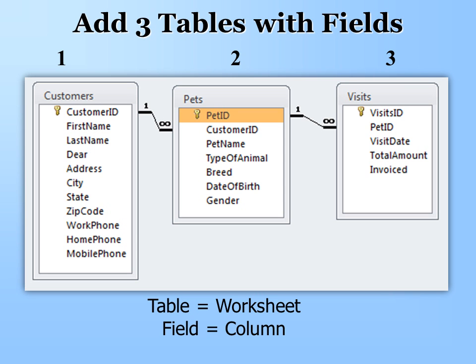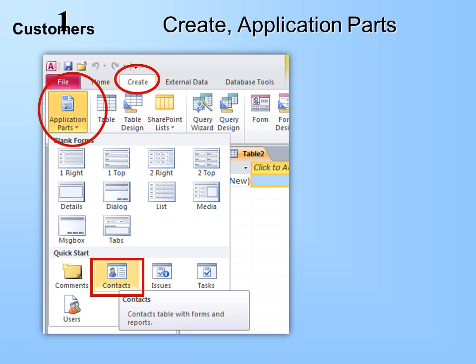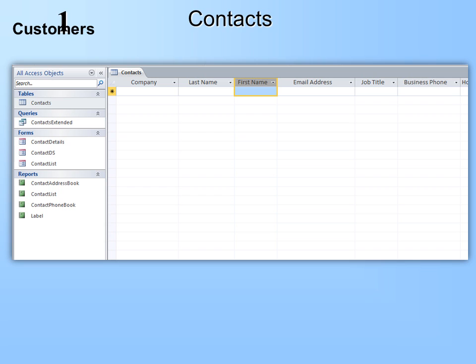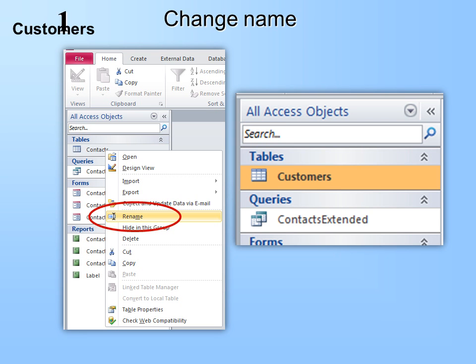We're going to add three tables with fields. A table is the same as an Excel worksheet, and a field is the same as an Excel column. The first table we're going to create using Application Parts, which is a pre-built table. So we'll go to Create, Application Parts, and there's one called Contacts. Even though we want Customers, it's pretty close, so we'll make some minor changes and use these quick start tools. Right-click on the table name and rename it from Contacts to Customers.